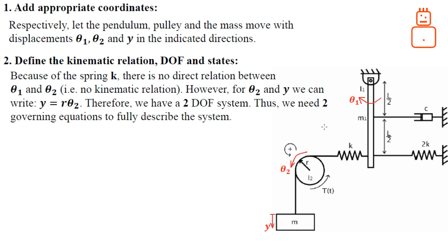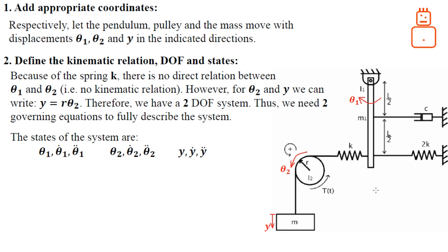The states are the corresponding derivatives of the degrees of freedom. For the pendulum we have angular displacement, velocity, and acceleration theta1, theta1-dot, and theta1-double-dot. Similarly for the pulley with theta2, or equivalently we may use the linear derivatives of block m: y, y-dot, and y-double-dot — position, velocity, and acceleration.